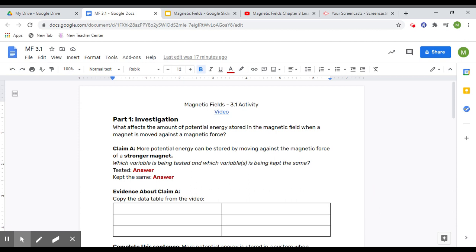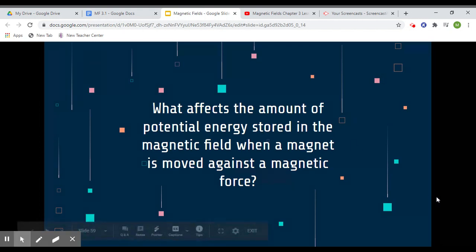Hi everybody, this is the lesson or the video for lesson 3.1 of magnetic fields. Today we're going to be trying to figure out this investigation question: what affects the amount of potential energy stored in the magnetic field when a magnet is moved against a magnetic force?